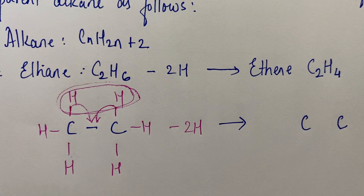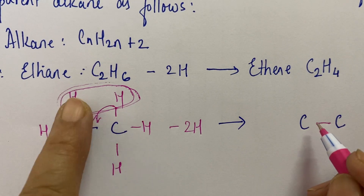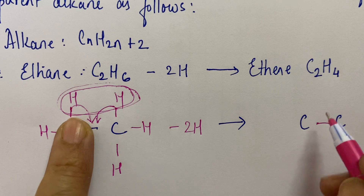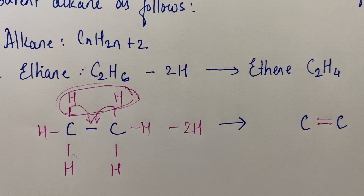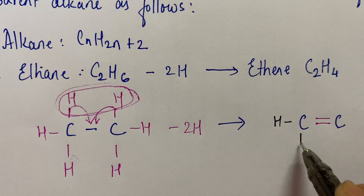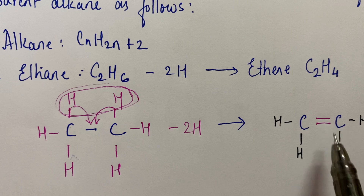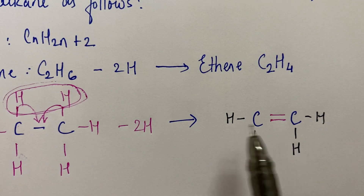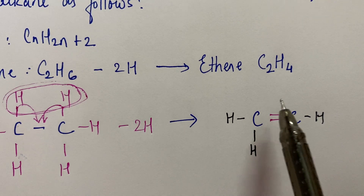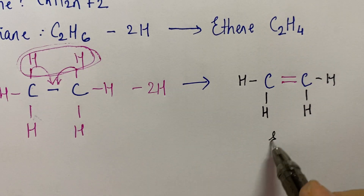So you will get ethene. Two hydrogens have been removed, so there is one bond here and one bond here. The valency that became unsatisfied upon removing hydrogen leads to second bond formation — a double bond. Remaining hydrogens are four. Carbon's tetravalency is satisfied. So you get the organic compound which is called ethene.